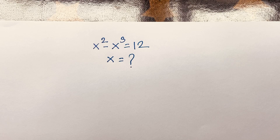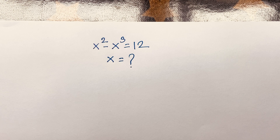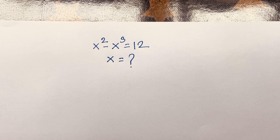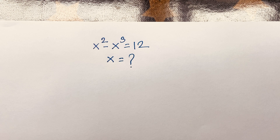Hello everyone. In this video we solve this exponential equation. The question is x squared minus x cubed is equal to 12, and we'll find out the value of x in this German Math Olympiad question.